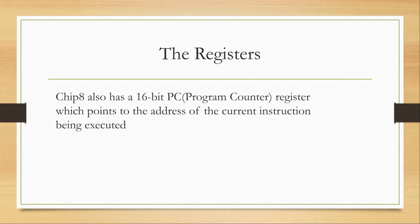Chip 8 has a program counter, and the job of the program counter is to point to the memory address of the instruction that we're currently executing. When we are ready to go to the next instruction, you increment the program counter by 2 bytes and then the next instruction will be executed. In the Chip 8, instructions are 2 bytes in size, which is the reason why we increment by 2.